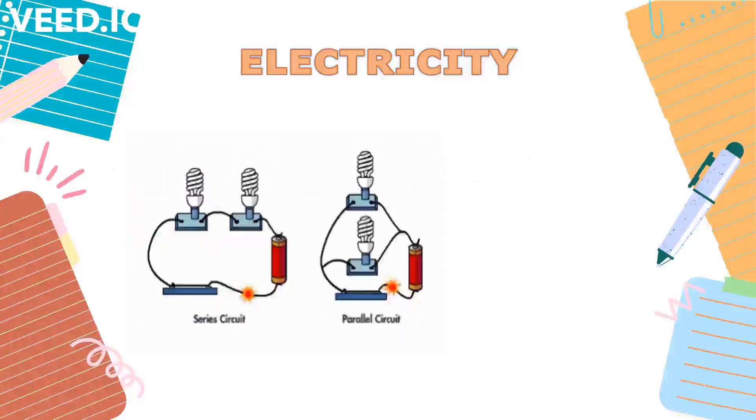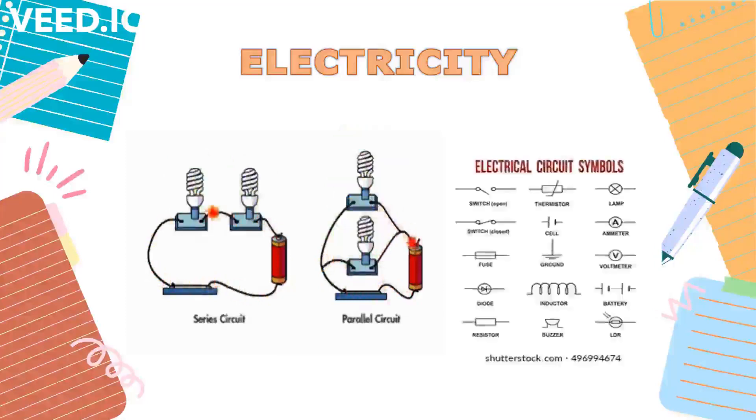A circuit is a closed loop that allows electric charge to move from one point to another. Electrical circuit symbols are graphical representations of electrical components, which are symbols used in a circuit.